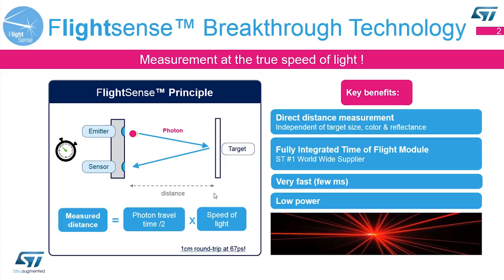Here we're showing a standard time-of-flight device. We have an emitter which is a laser VCSEL transmitting photons. The photons will travel out, hit the target, bounce off it, and come back to our sensor. Knowing the amount of time that the photon traveled, we can calculate down to the millimeter the distance and give you that distance data.